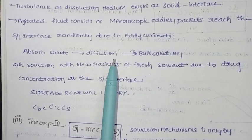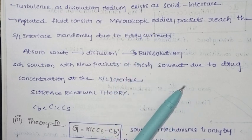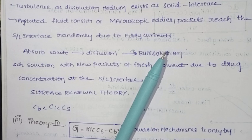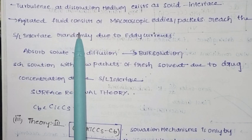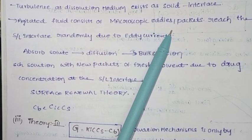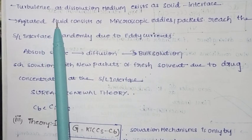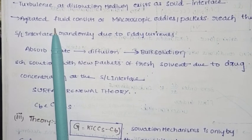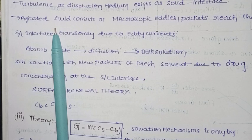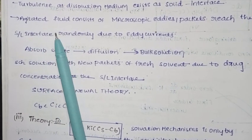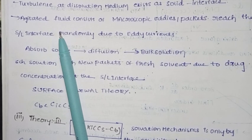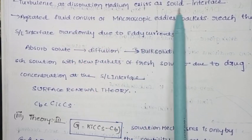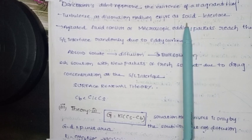If there is only one layer, this would be the perfect stagnant layer. However, Danckwerts didn't approve the existence of a stagnant film. Turbulence exists—turbulence means clumsy or unclear. Turbulence exists at the solid-liquid interface, which contradicts the concept of a stagnant layer film.